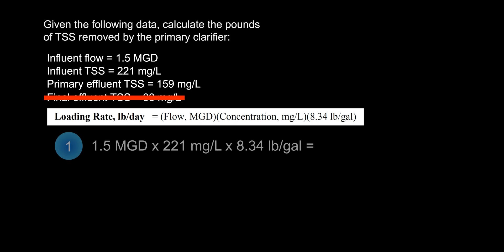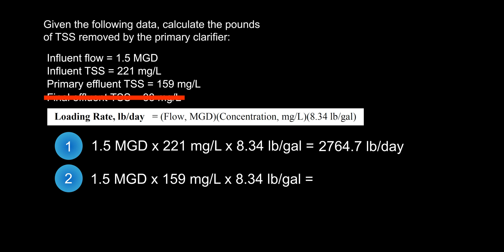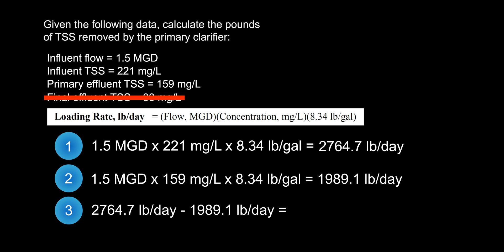For the first part of our answer, we're going to solve for pounds per day of influent TSS: 1.5 MGD times 221 mg/L times 8.34 pounds per gallon equals 2,764.7 pounds per day. For the second part, we figure out the pounds per day of primary effluent TSS: 1.5 MGD times 159 mg/L times 8.34 pounds per gallon equals 1,989.1 pounds per day. Lastly, we subtract our second answer from the first: 2,764.7 minus 1,989.1 pounds per day.